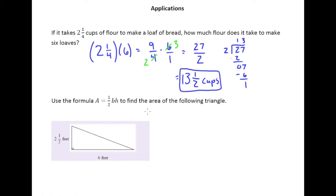Another example here — it says, use the formula one-half b times h to find the area of the following triangle. So, if you haven't had much experience with triangles, the base is going to be this six right here, and the height is the two and one-third feet here.